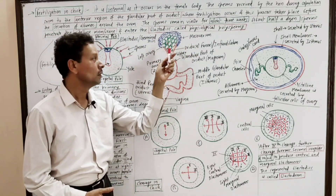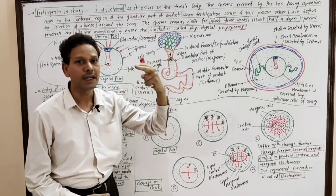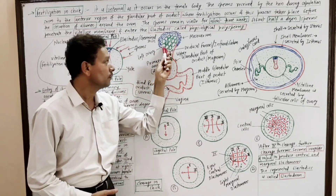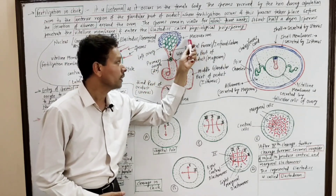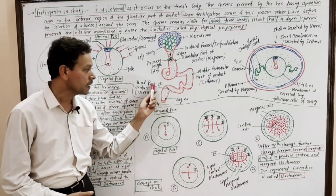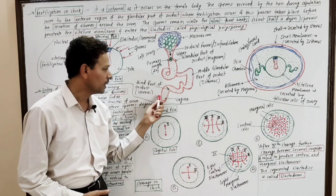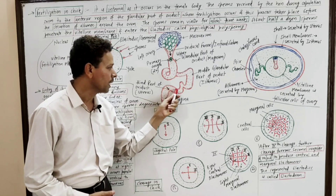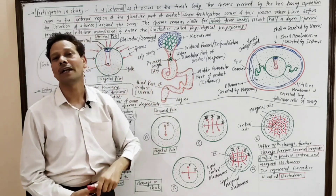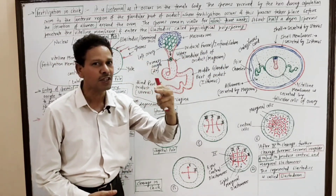From the ovary, this immature ovum, which is released at the stage of a primary oocyte — it is a diploid body — is received by this funnel-shaped part of the oviduct, whether it is the oviduct funnel or the infundibulum. The sperms, which are received by the hen's body in the vagina, enter from the vagina into the oviduct and finally reach the site of fertilization — that is the magnum — where fertilization occurs. It means fertilization is internal.